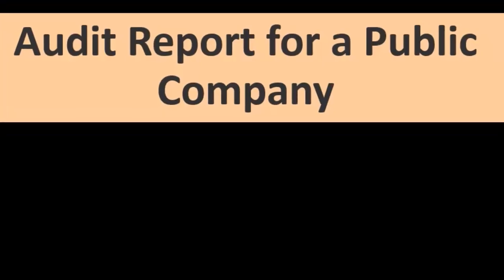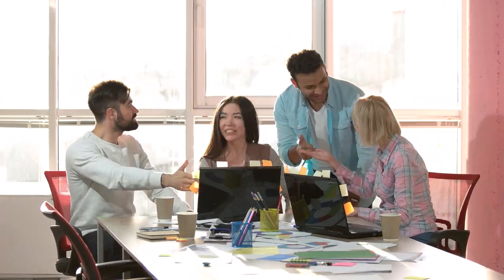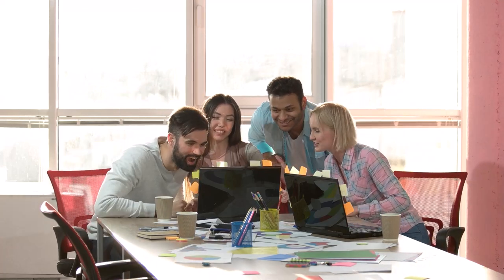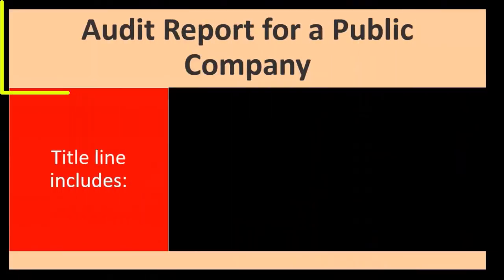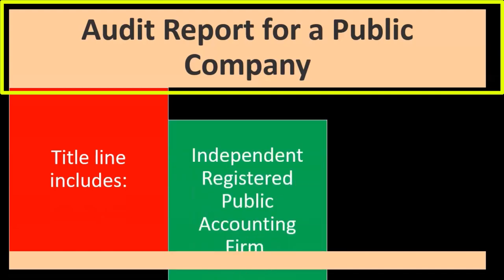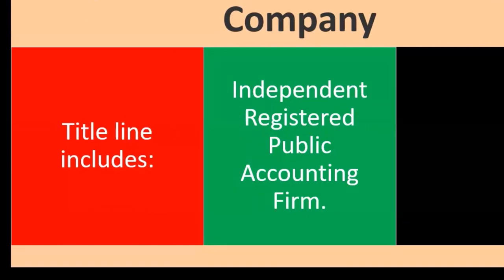Later on, we'll go through the audit report in more detail as we go through the steps of the audit. But we want a good idea of the endpoint as we start through the audit process. For a public company audit report, we're going to have a title line which includes 'independent registered public accounting firm,' giving assurance to the reader.